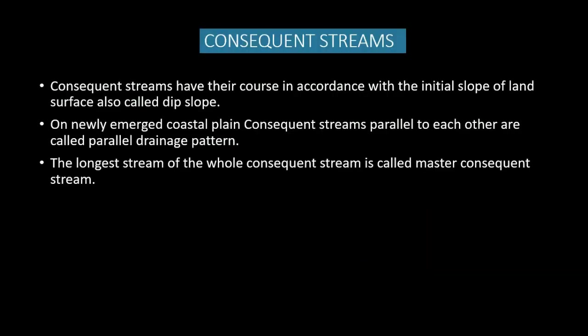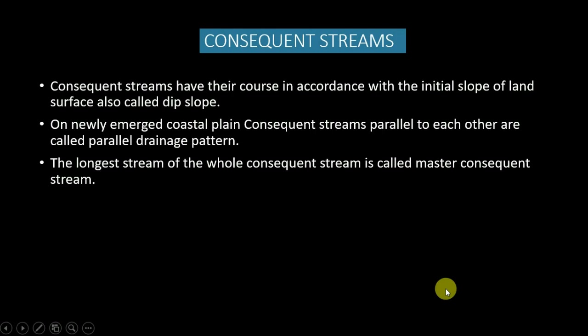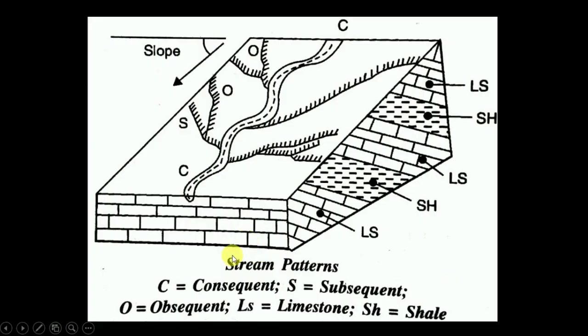Let's talk about consequent streams. A consequent stream is basically the master stream which follows the regional slope. Consequent streams have their course in accordance with the initial slope of the land surface. When two consequent streams flow parallelly — which can mostly be seen in coastal plain regions — then it is called parallel drainage. The longest consequent stream can be called the master consequent stream. In the picture, you can see a consequent stream following the slope downward.